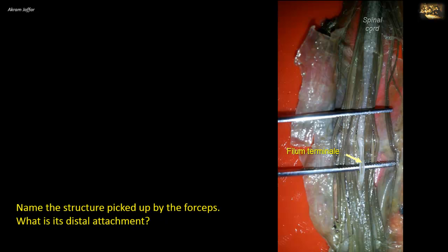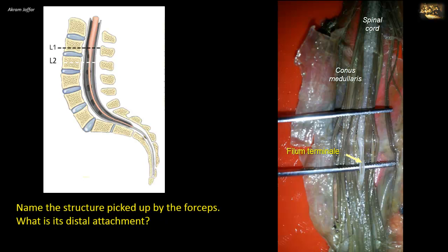Note that the cylindrical spinal cord tapers at its lower end to form the conus medullaris, and below the level of the intervertebral disc between L1 and L2 in the adult, the tip of the conus medullaris continues as a connective tissue filament covered by pia mater, constituting the filum terminale. It lies in the middle of the cauda equina and can be easily distinguished by a distinctive bluish coloration, compared to the surrounding nerve roots.